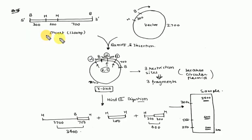For the solution, you have vector and insert. Insert in 5' to 3' direction. There's 300 base pairs here and 300 base pairs there. In H plus BAMH1, you will get 300 plus 300, which is 600 base pairs. Then 200 base pairs to HIN3 site, then 700 base pairs to BAMH1 site.